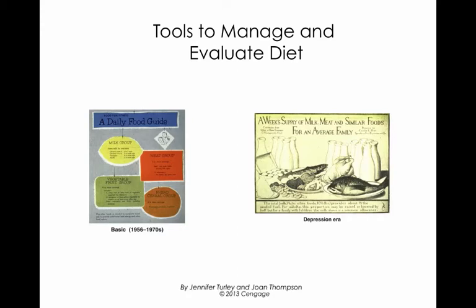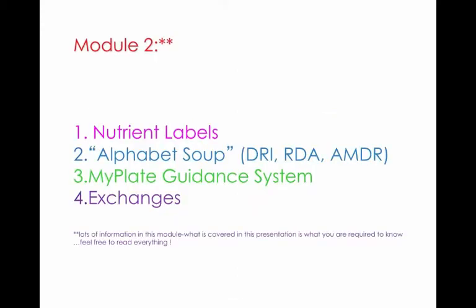On the left here you can see what the recommendations were between 1956 and during the 1970s — the daily food guide. On the right is an assessment of what folks were eating during the depression: pretty low on vegetables and fruit, pretty high on protein. There's a lot more information in module two than what we're going to cover, but please feel free to read whatever you want in the book, and beyond — if you have any questions, I'm interested.